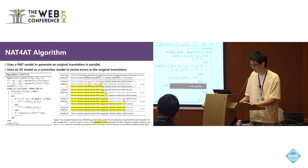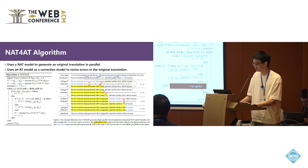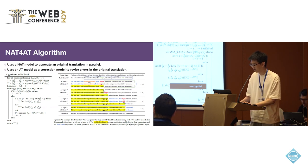Therefore, we propose a simple and effective method called NAT for AT. Briefly, our method uses an NAT mode to generate an original translation in parallel, and then uses an AT mode as a correction mode to revise errors in the original translation.